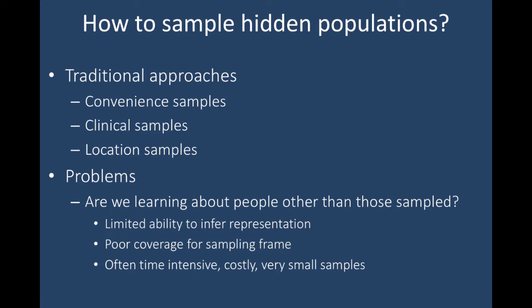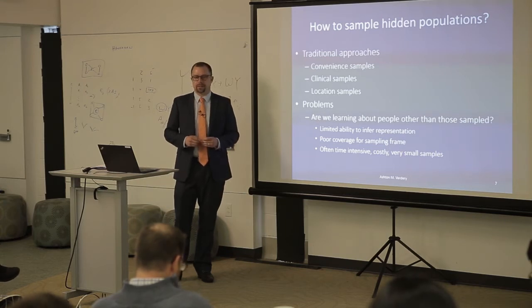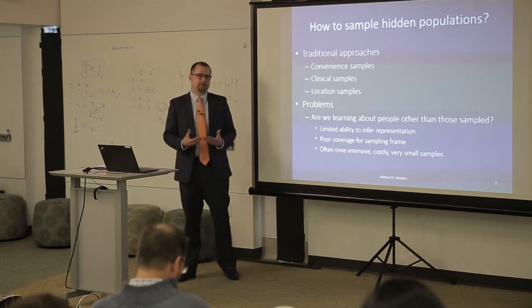The problem with all of those approaches is the question of whether we're learning about anybody beyond just the people we sampled. With convenience samples, there's no way to make inference to a larger group. With clinical samples, you're limited to people attending that clinic. With location samples, you're limited to people in fixed locations. Another issue is that they are often very costly and time intensive and typically yield small samples — most location-based sampling studies I've seen do heroic work but still yield samples of 50 to 150 people, which is often very small for many analytic purposes.